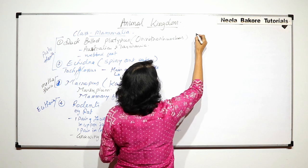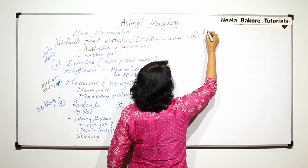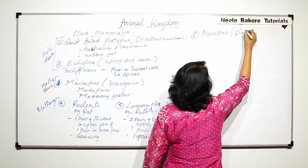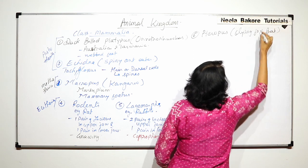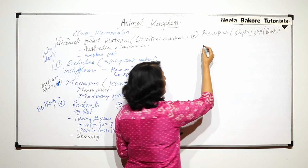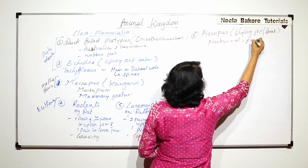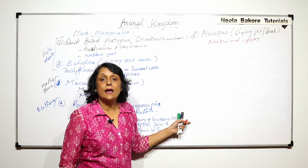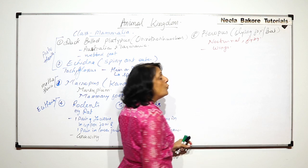Now the next example is of Taeropus, that is commonly known as flying fox or bat. These are nocturnal animals, flying mammals. Nocturnal flying mammals, and in them there are wings present. They have wings. Flying mammals, again a special feature, and these bats hang upside down.